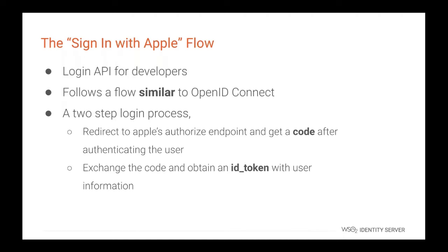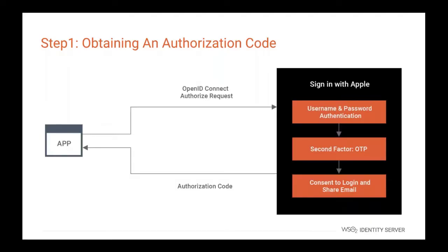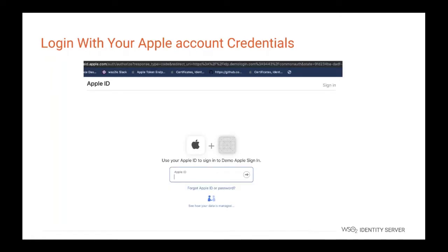Apple doesn't document how this works extensively, but it seems they are using an OpenID Connect authorization code grant flow behind the scenes — though it is not fully compatible with the standard OpenID Connect authorization code grant flow; there are slight variations. There are two main steps in that flow: first, the application talks to Apple and does the user authentication, and Apple sends an authorization code back to the application. Then the application exchanges that code for an ID token containing user information and an access token.